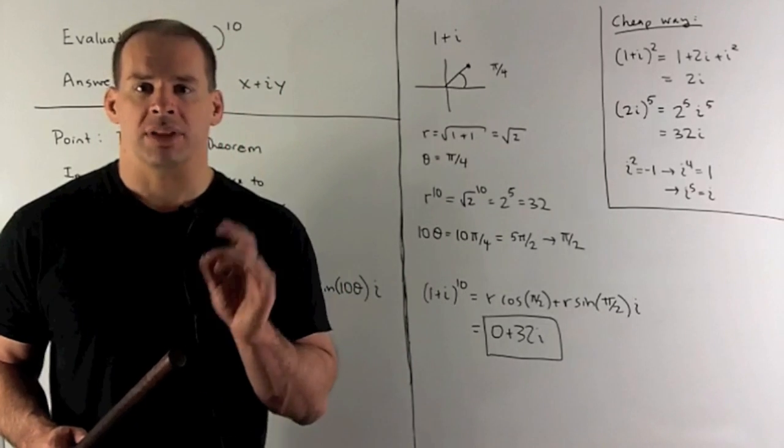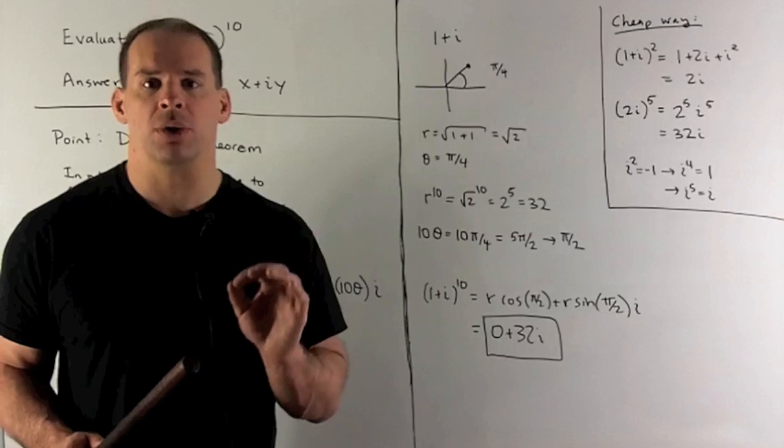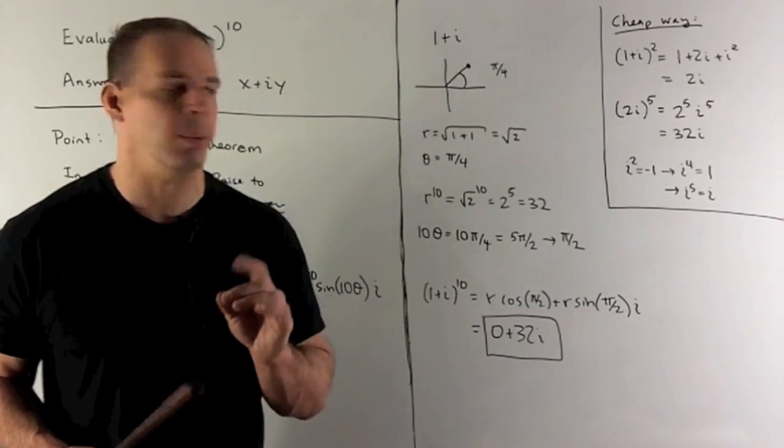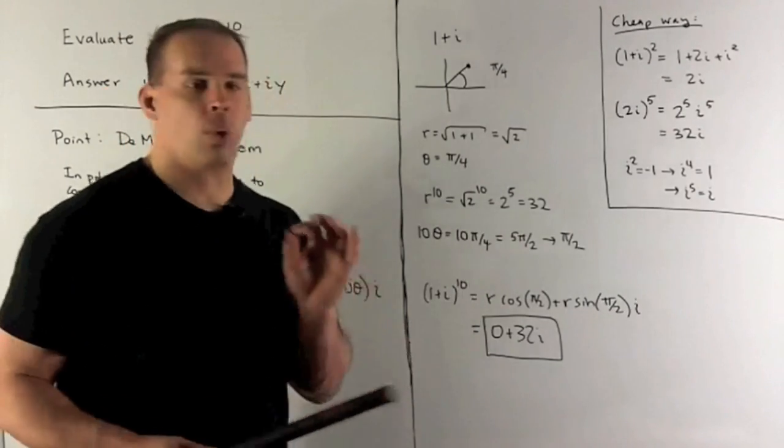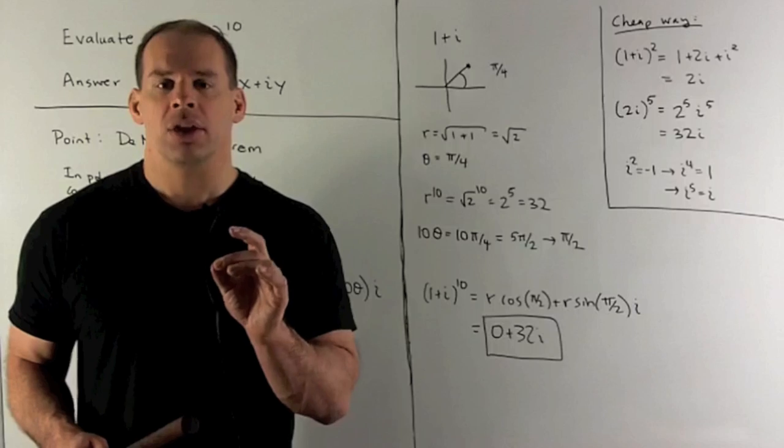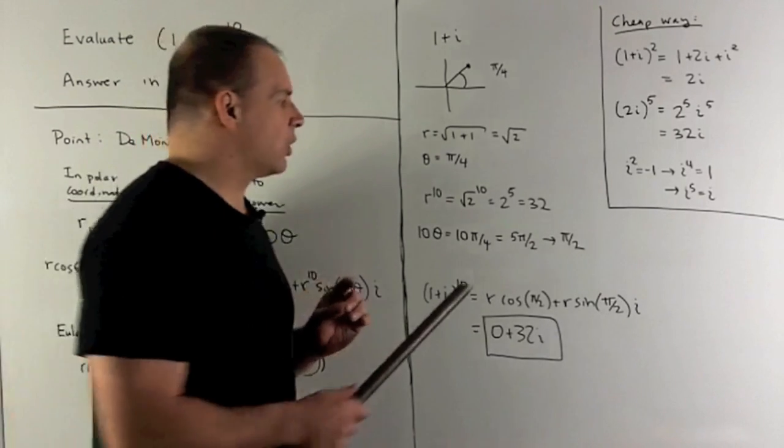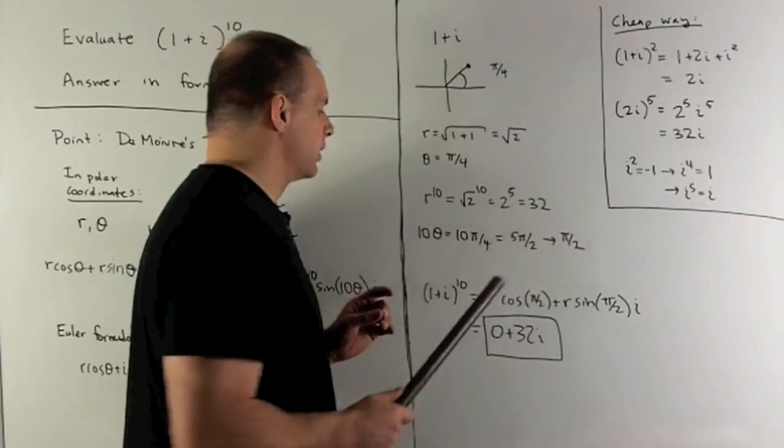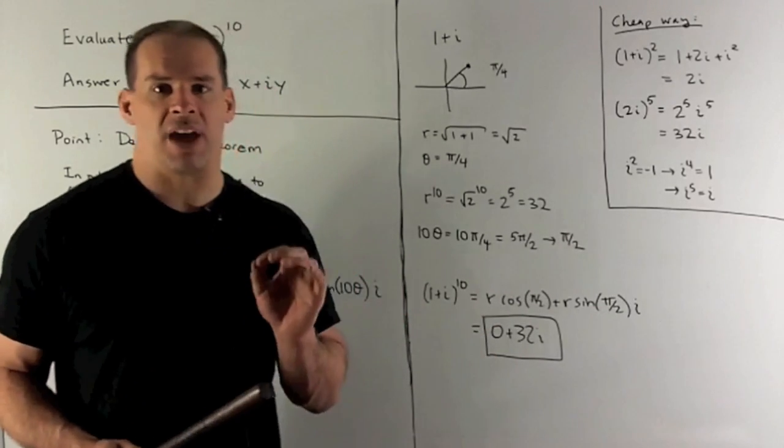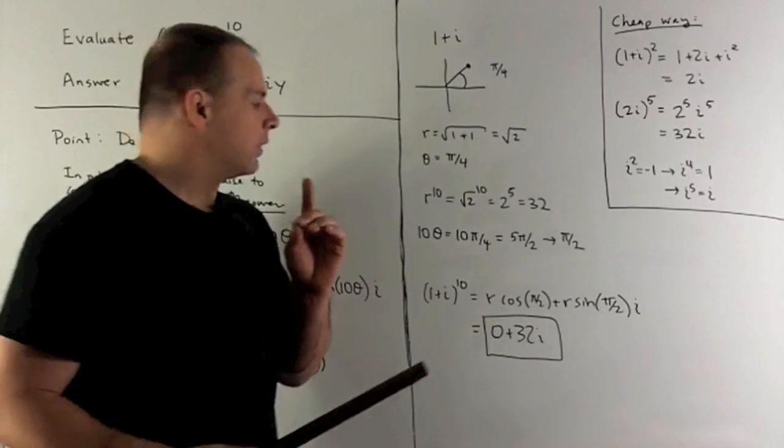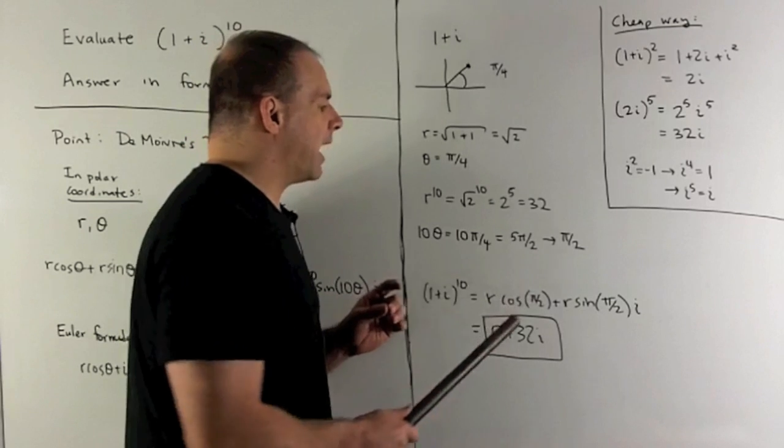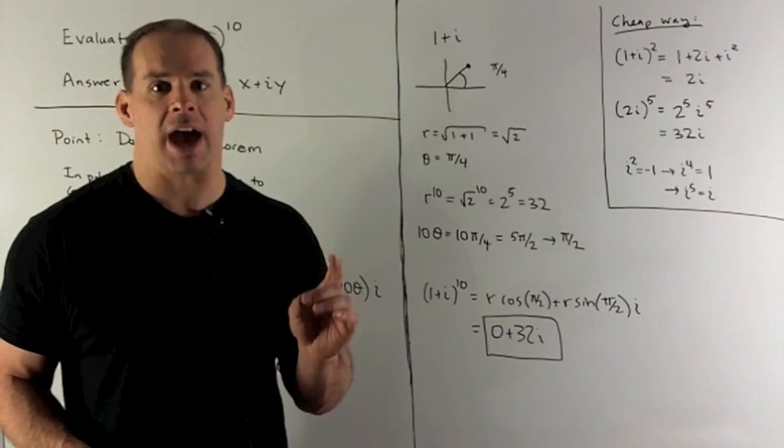r to the 10th power. I'm going to take square root of 2 to the 10th power, or 2 to the 5th power. I get 32. For 10 times our angle, so we're looking at 10 times pi fourths, or 5 pi halves. That's going to be coterminal with pi halves. So if I take 1 plus i to the 10th power, what are we going to get?